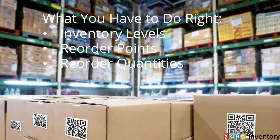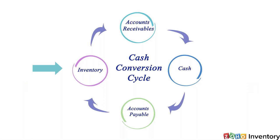You need to know when you should reorder a product, and when you do, how many you should actually order. This is critical for your business, because if you don't have the right level of inventory, you could run out of cash in two different ways. One is if you have too much inventory — you have too much of your cash invested in inventory. And if you don't have enough inventory, perhaps the customer goes looking elsewhere to buy that product, and then you don't have their cash.